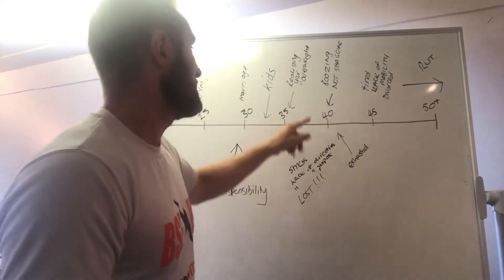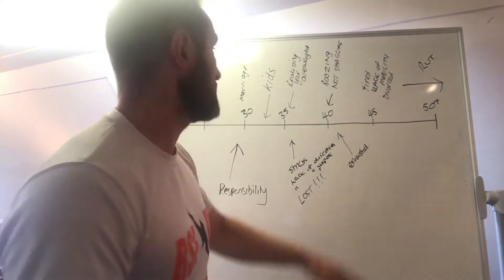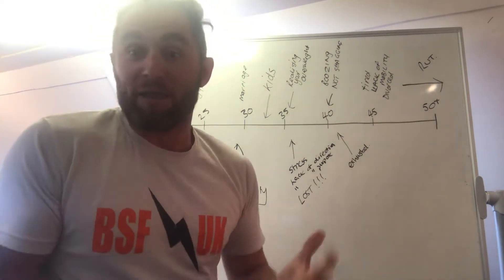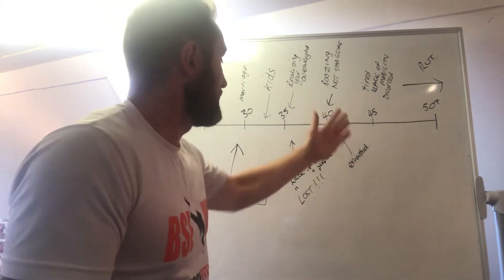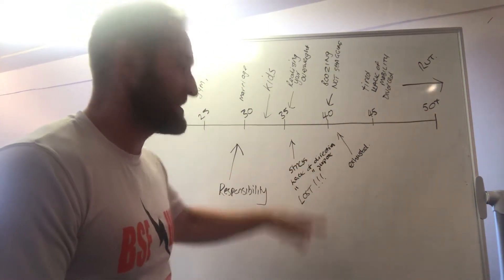As we creep to 40, we suddenly start boozing to forget all of the frustration. We're not shagging, so we're not happy because we're overweight, we're stressed, lack of direction, lack of purpose, we're lost.